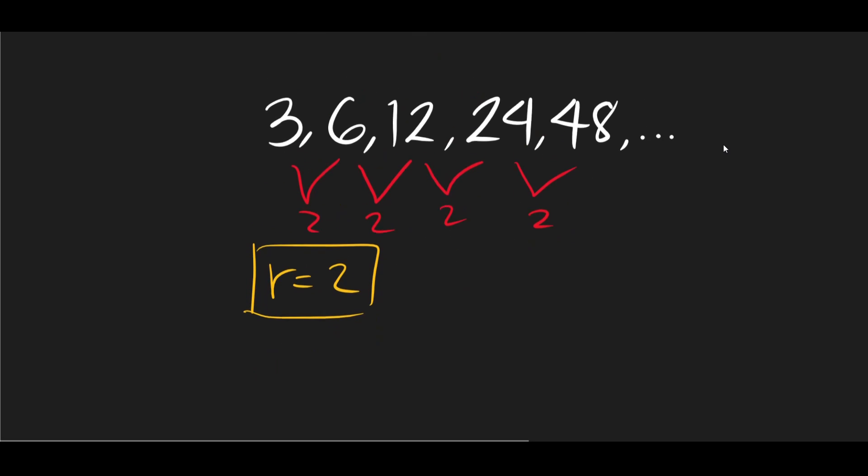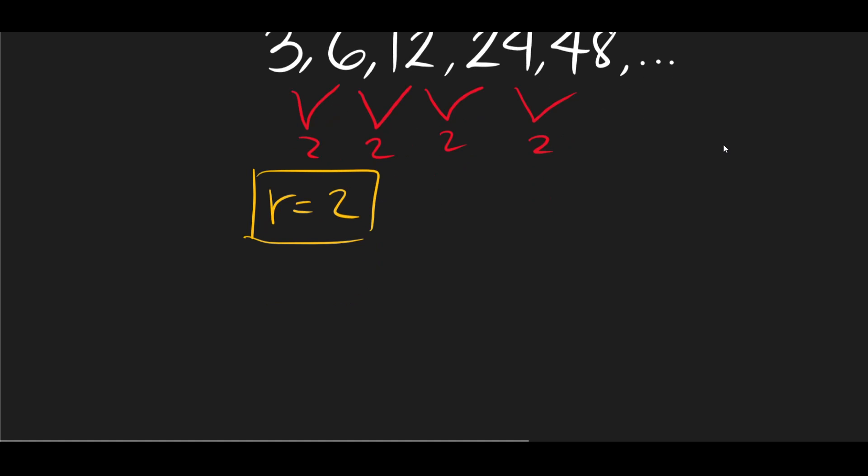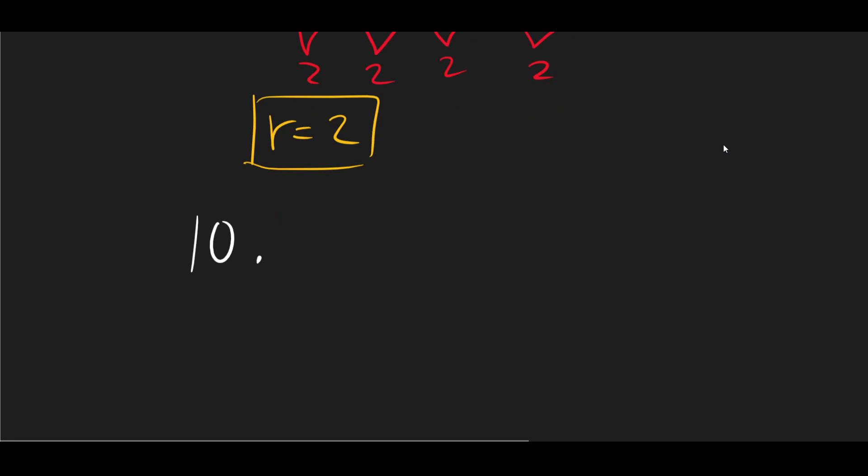Now, the common ratio can also be, let's say, 1 half. So for example, we have here 10. Let's say our first term is 10. And if our r is equal to 1 half, then you'll get the second term to be 5.